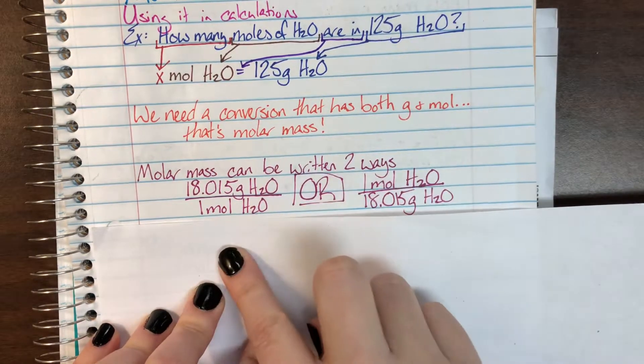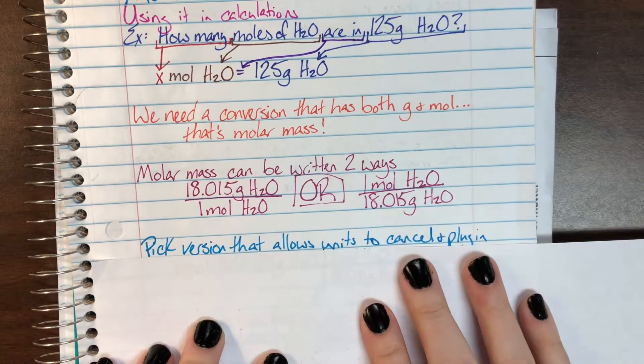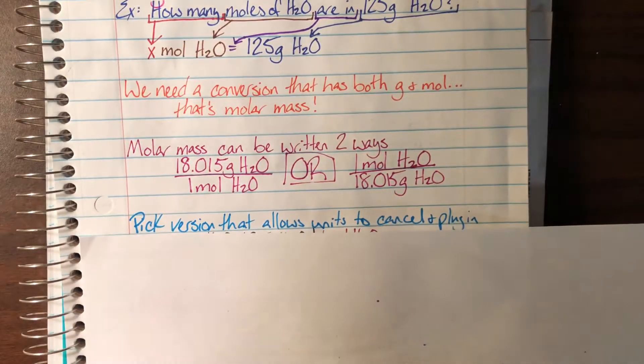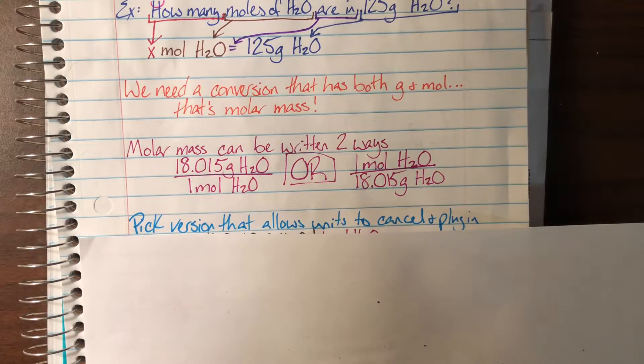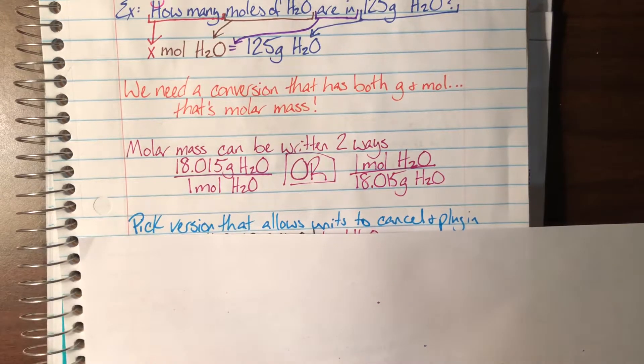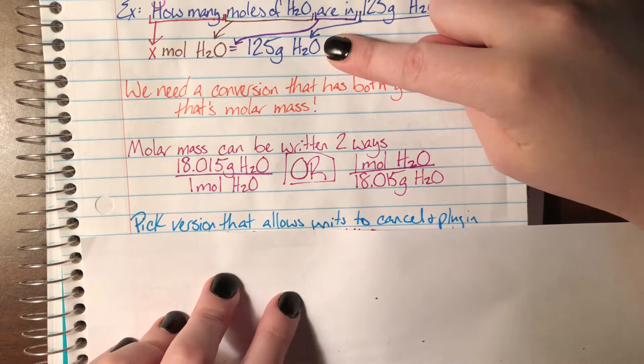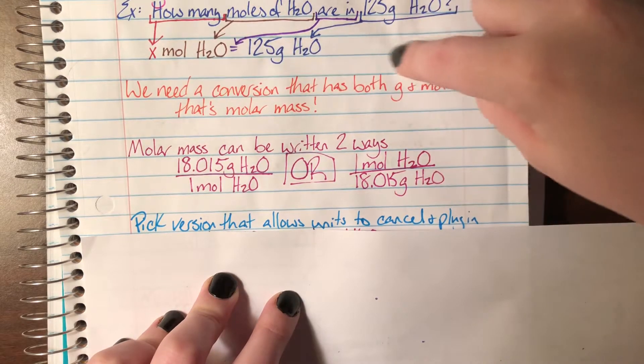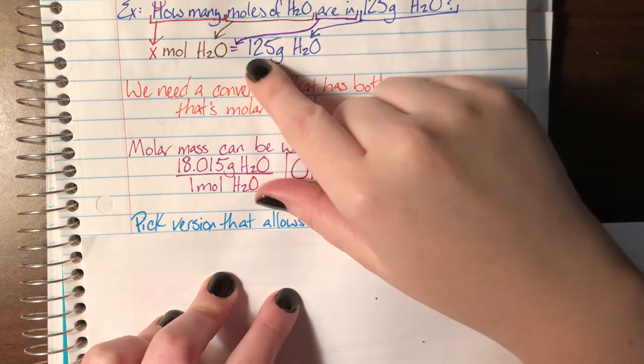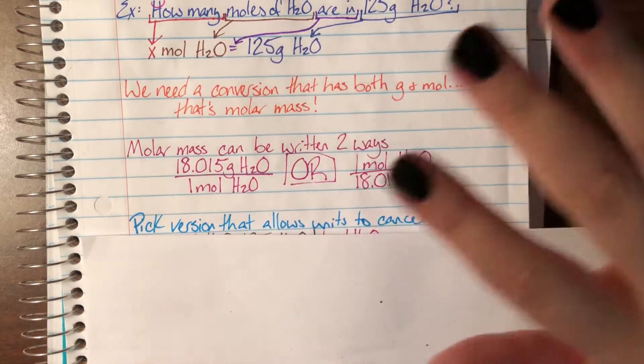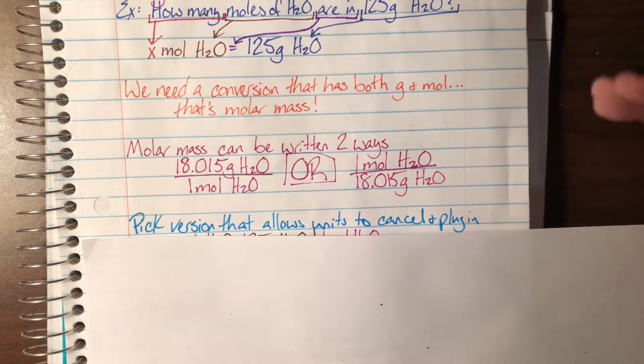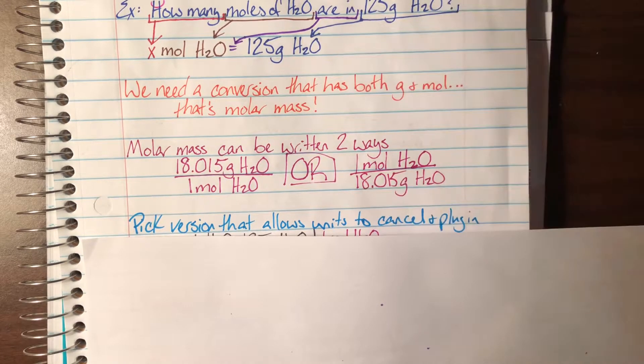But now we actually still need to solve that equation. So we are going to be picking the version of the ratio that we just found that allows us to cancel out units. Now remember in math, if something is on the top of a fraction and on the bottom of a fraction, we're able to cancel it out. So we're going to look at our actual initial setup here. I see that grams is currently on the top. Well, if I want grams to cancel, that means I need grams on the bottom. So I'm going to pick the ratio that already has grams on the bottom so I can cancel this unit out.